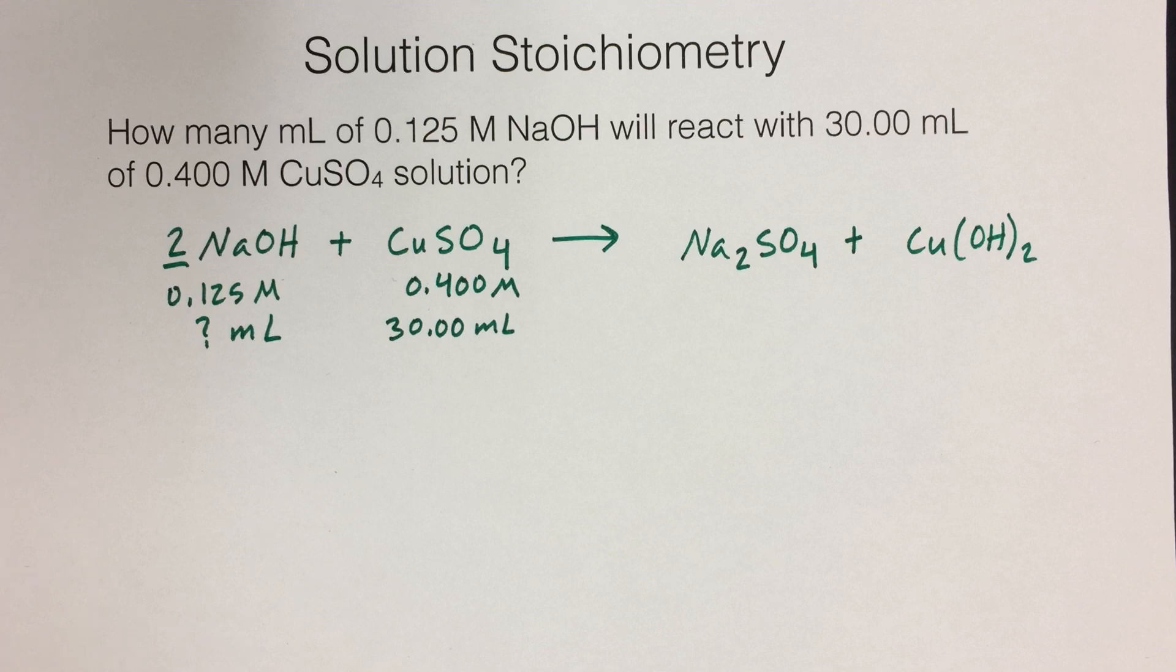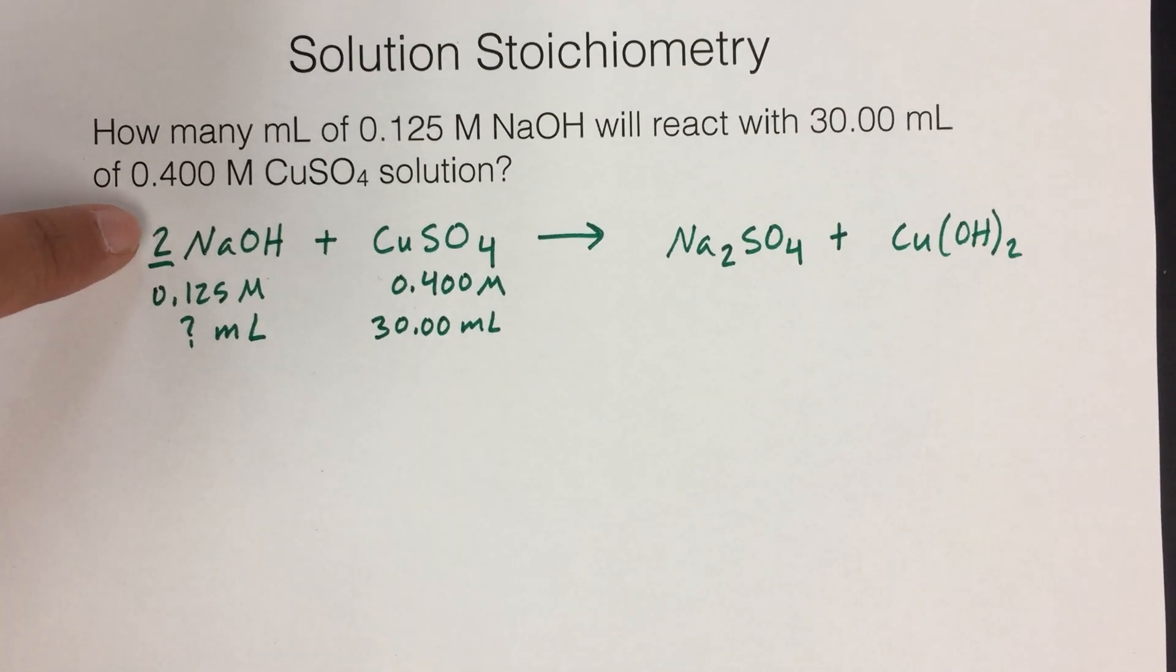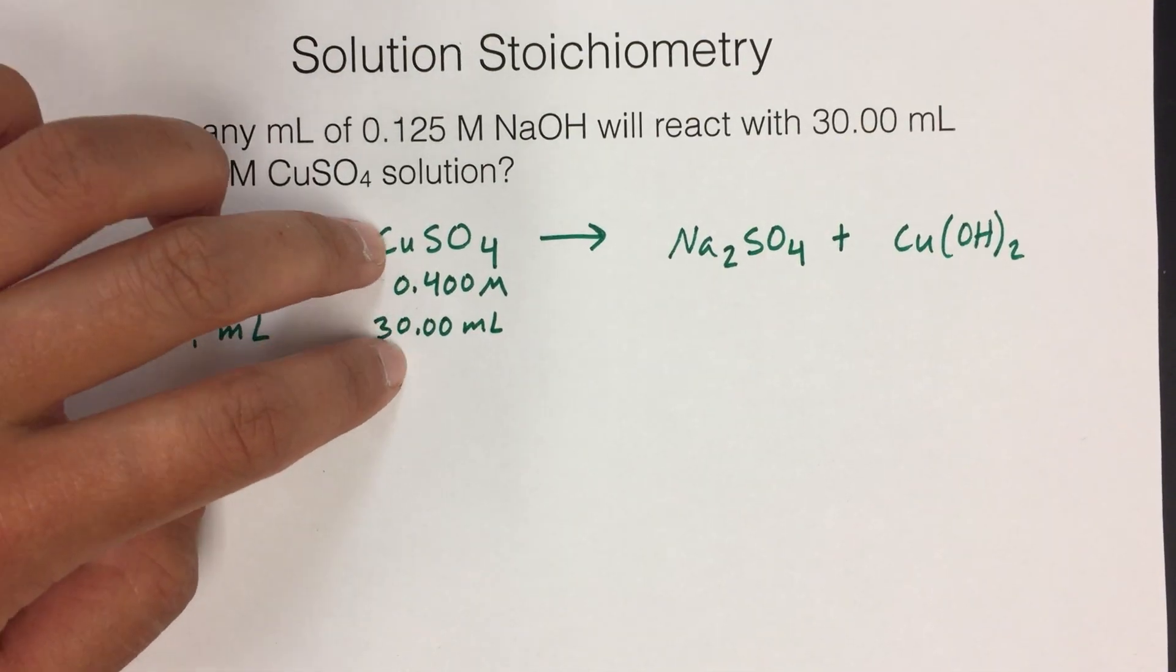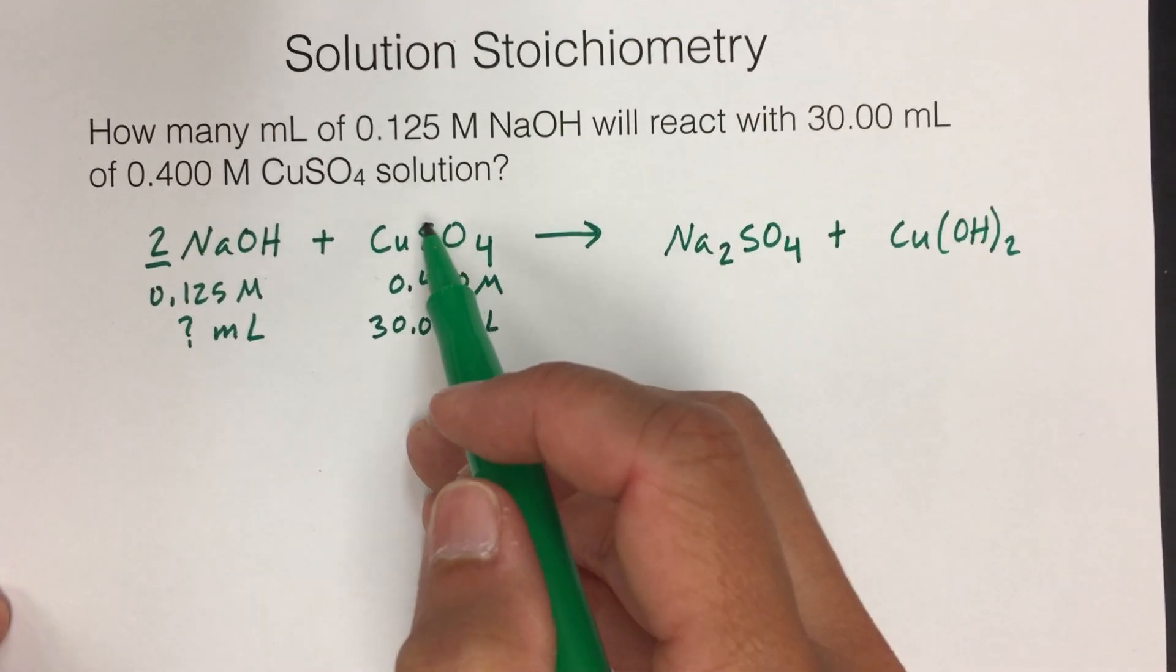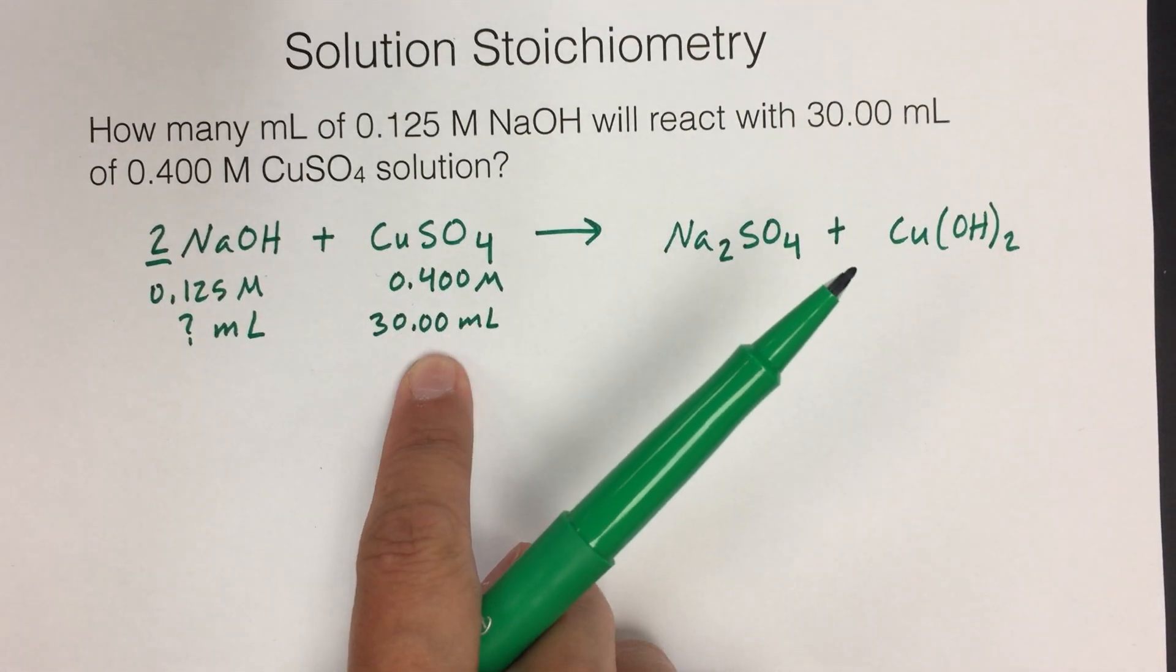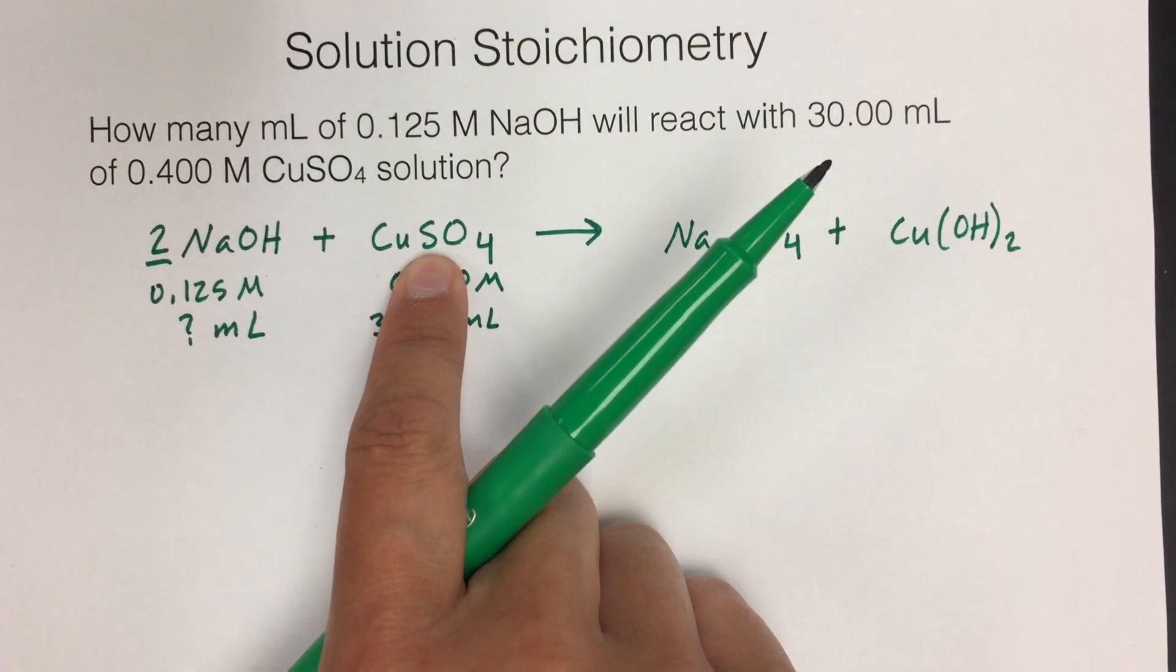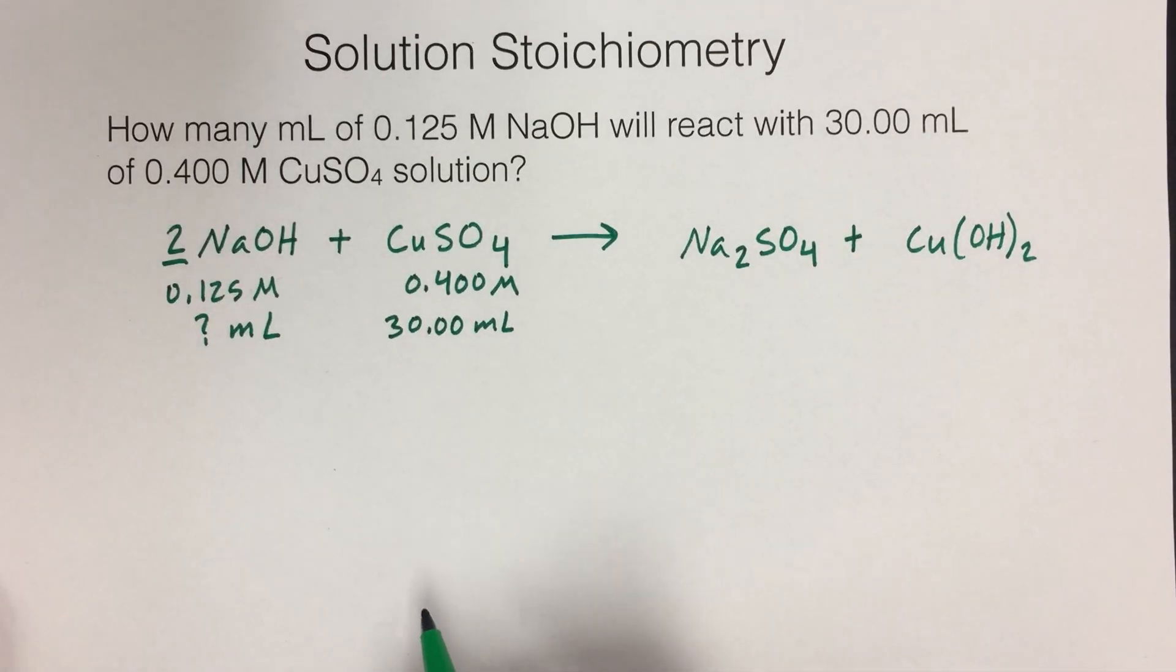And what I want to do, since this is stoichiometry, is we need to find out information about this. But what we're given is a bunch of information about this. And so what we can do is, using stoichiometry, we know that we can convert from this to this, but we need moles in order to do that. That's the whole magic of a balanced chemical equation, is that you can do a mole ratio. So what you want to do is use these numbers to get your moles of this, and then we can move over to this by using the mole ratio.